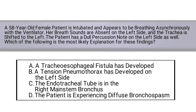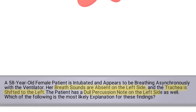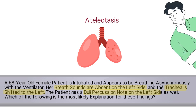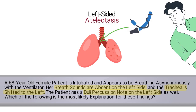To get this one correct, you needed to interpret the information provided. The question states the patient has a dull percussion note on the left side, a tracheal shift towards the left, and absent breath sounds on the left side. You needed to recognize these are all signs of atelectasis. In this case, the endotracheal tube has likely slipped into the right main stem bronchus, which resulted in left-sided atelectasis.